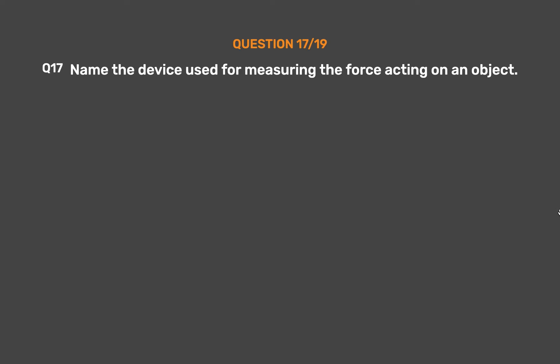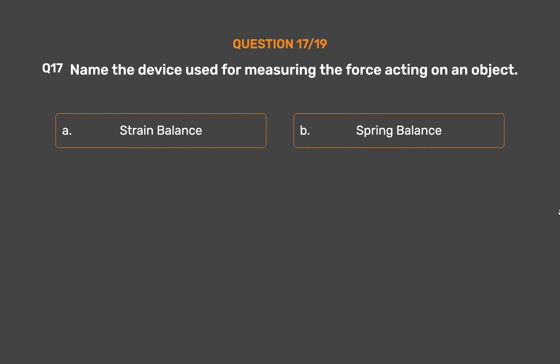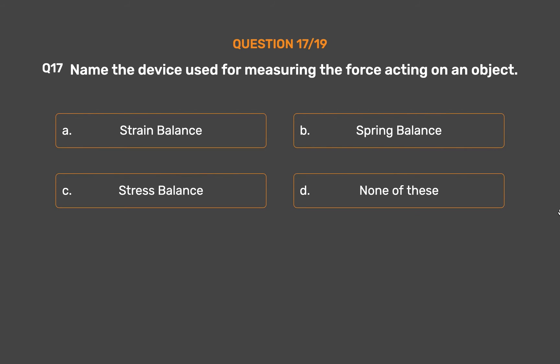Question number 17. Name the device used for measuring the force acting on an object. Option A: Strain balance. Option B: Spring balance. Option C: Stress balance. Option D: None of these.